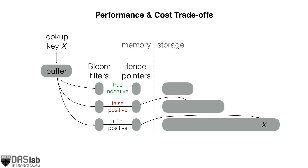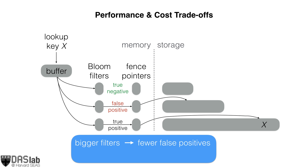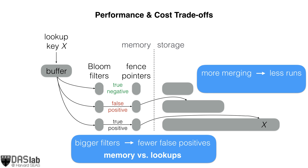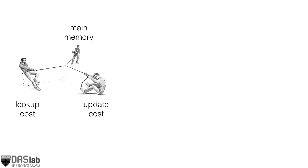There are some interesting performance cost trade-offs in this space. In particular, the bigger we set the bloom filters to be, the fewer false positives we get during runtime, and so the cheaper a lookup cost becomes. This creates a main memory vs. lookup cost trade-off. Moreover, the more aggressive we are about merging runs during runtime, the higher the amortized cost of update becomes, but the fewer runs we have to probe during lookups, and so this creates a lookup cost vs. update cost trade-off. Overall, there are three performance cost metrics that we can trade off against each other: main memory, update cost, and lookup cost.